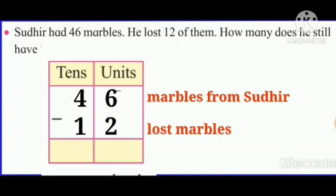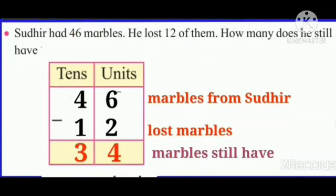Next example: Sudhir had 46 marbles. He lost 12 of them. How many does he still have? Sudhir had 46 marbles and he lost 12 marbles, so 46 minus 12. Remember, children, always start subtracting from the units column first. 6 minus 2 is equal to how much? Yes, 6 minus 2 is equal to 4. Now in the tens column, 4 minus 1 is equal to how much? Yes, 4 minus 1 is equal to 3. So 46 minus 12 is equal to 34. Therefore, Sudhir still has 34 marbles.